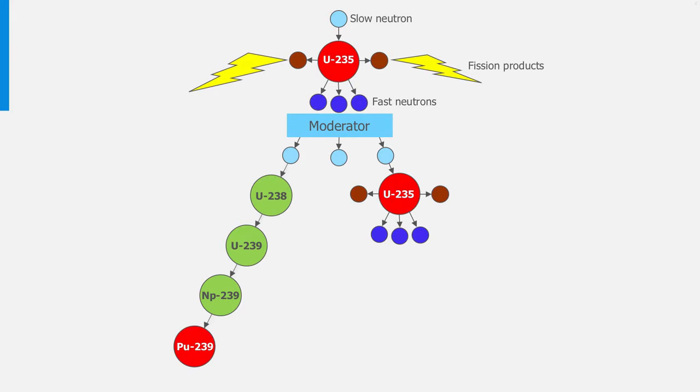In the latter case, uranium-239 is produced, which decays after two steps into plutonium-239, which is also fissile and which can be fissioned in the next generation of fission processes.